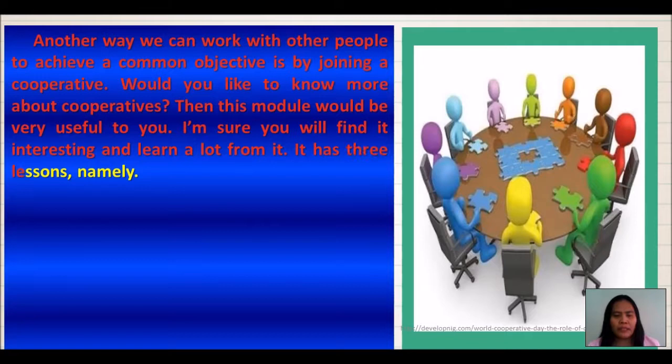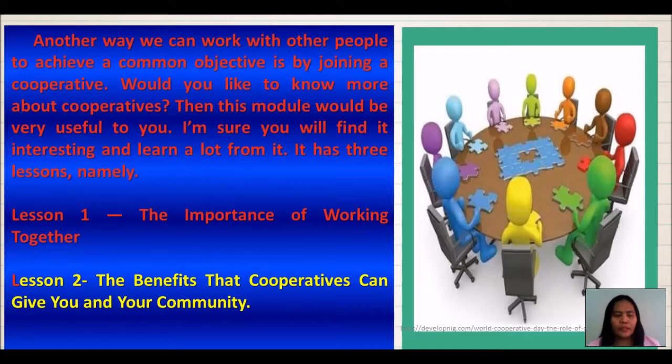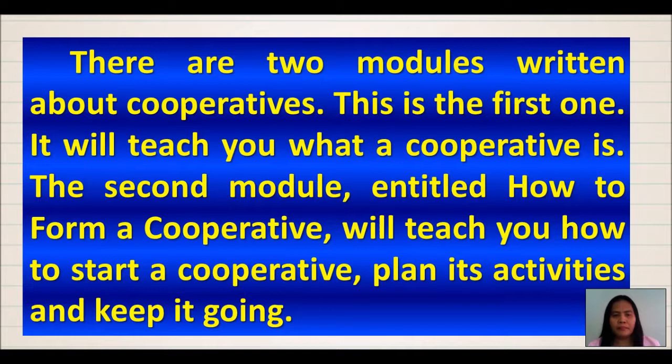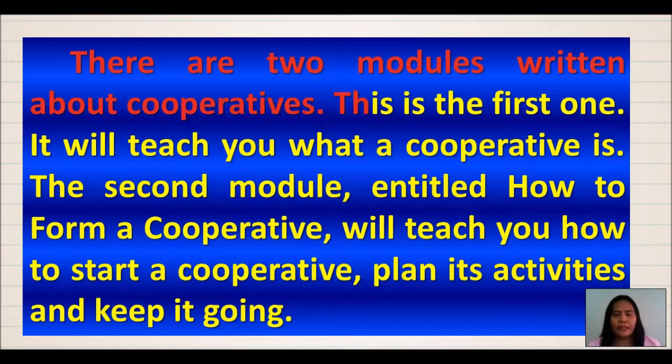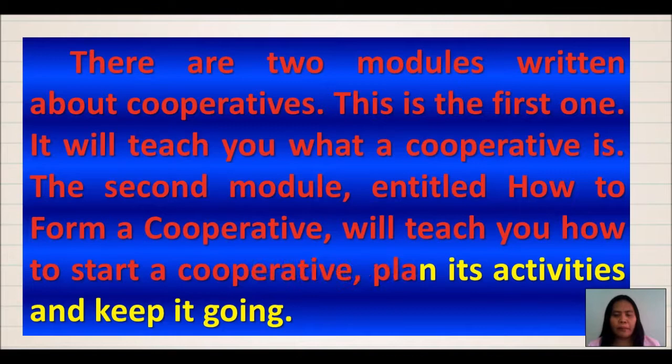This module has three lessons: Lesson 1, The Importance of Working Together; Lesson 2, The Benefits that cooperatives can give you and your community; and Lesson 3, Types of cooperatives. There are two modules written about cooperatives. This is the first one — it will teach you what a cooperative is. The second module, entitled How to Form a Cooperative, will teach you how to start a cooperative, plan its activities, and keep it going.